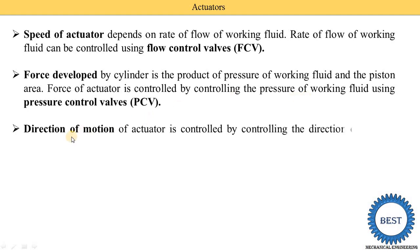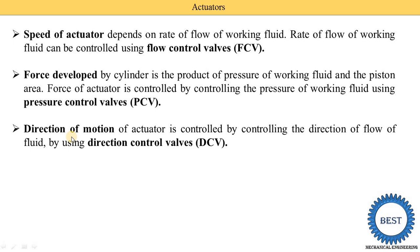The direction of motion of the actuator — whether it rotates or moves in a certain direction — is controlled by controlling the direction of flow of fluid using directional control valves. Directional control valves are abbreviated as DCV. For changing the direction of the actuators we need to use directional control valves.